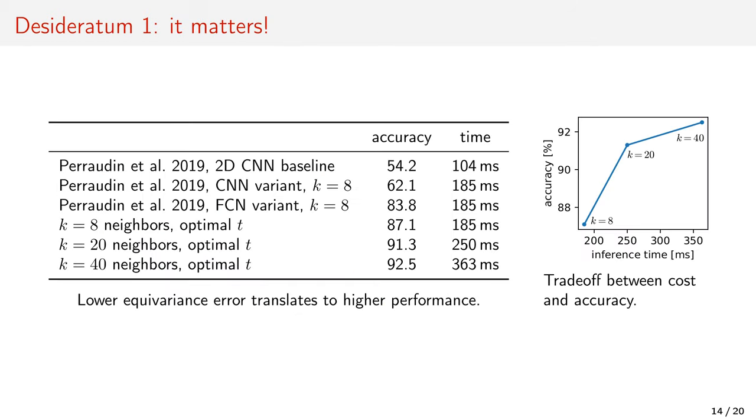That matters in practice. In the classification of cosmological maps, lower equivariance errors translate to higher accuracy. We now have a trade-off between cost and accuracy with diminishing returns.